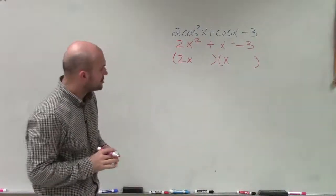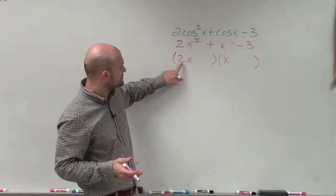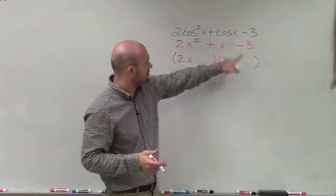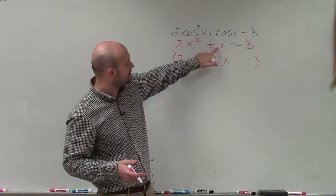And then I need to pick two numbers that are going to multiply to negative 3 with my coefficients of 2. So I need two numbers that are going to multiply to negative 3, but when multiplied by my first term, are going to add to give me positive 1.